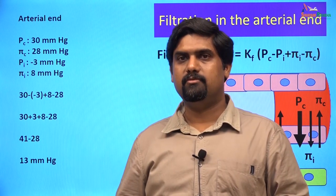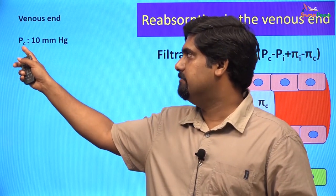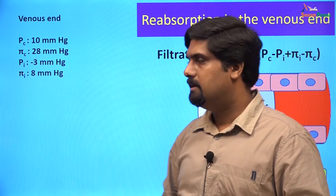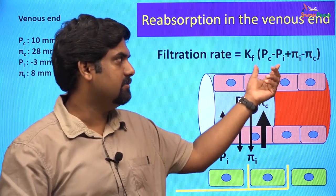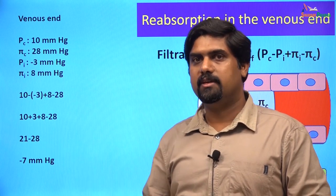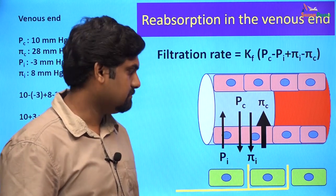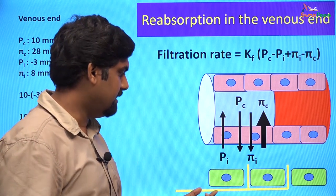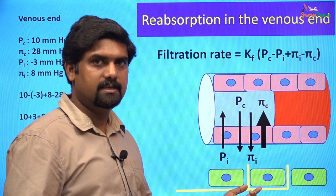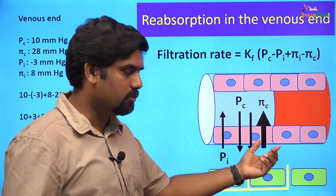Now let us see the magnitude of the Starling forces at the venous end of the capillary. The capillary hydrostatic pressure at the venous end is about 10 mmHg. The other forces are the same as in the arterial end. If you put these values into this equation, we will get a net filtration pressure of about minus 7 mmHg, which will favor reabsorption at the venous end. So most of the fluid that gets filtered gets reabsorbed at the venous end. The remaining fluid is removed by the lymphatic vessels present within the tissues, which return this fluid back into the circulation. The lymphatic system is very important to prevent excess accumulation of tissue fluid in the interstitium, and they also help in returning to the circulation small amounts of proteins that get filtered.